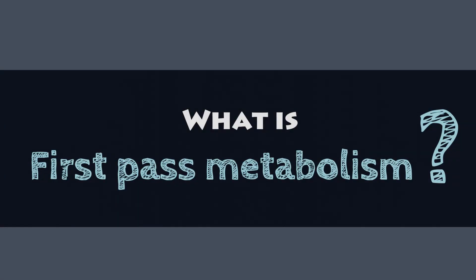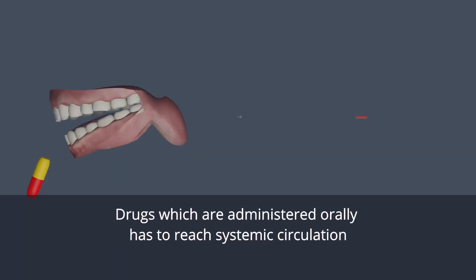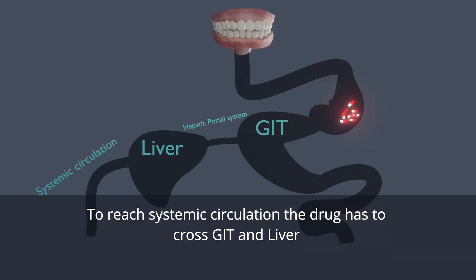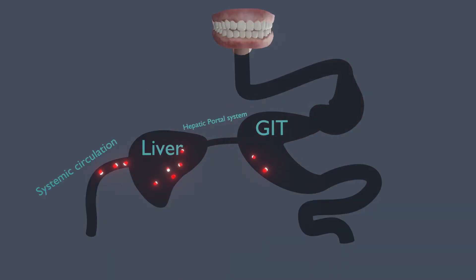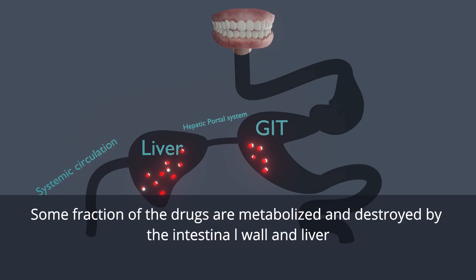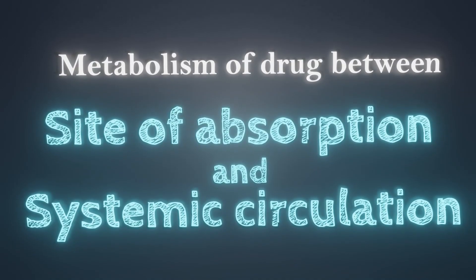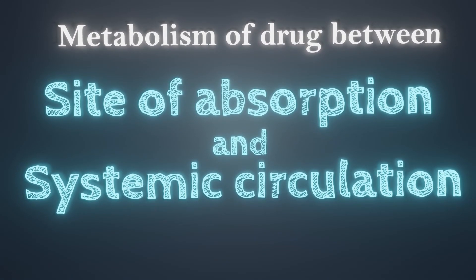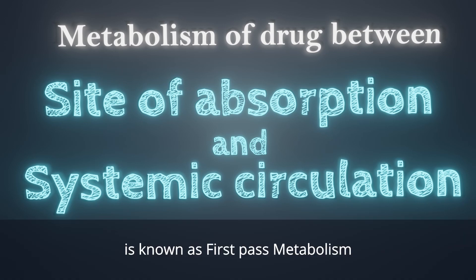What is first-pass metabolism? Drugs which are administered orally have to reach the systemic circulation to perform their action. For that, they have to cross the GIT and reach the liver through the hepatic vein. But during this passage, some fraction of the drugs are metabolized and destroyed by the intestinal wall and the liver. Therefore, the metabolism of the drug between the site of absorption and the systemic circulation is known as first-pass metabolism.